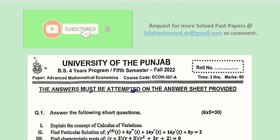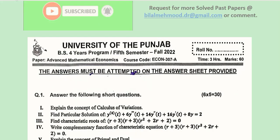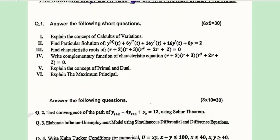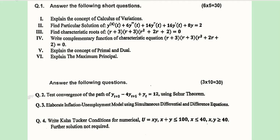Hi there. In this video we will continue the process of solving the past papers. In the last video we solved the paper of Fall 2021 of the B.S.C.A. program, 4-year program, 5th semester, of the affiliated colleges with University of the Punjab. The course code is 307A and now we are going to solve the Fall 2020 question paper. It has short questions and long questions, just like we have seen in the last video — 6 short questions and 3 long questions.